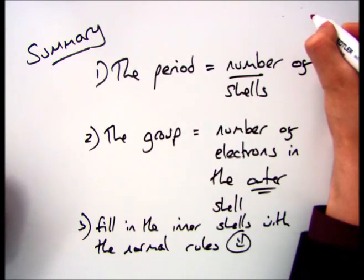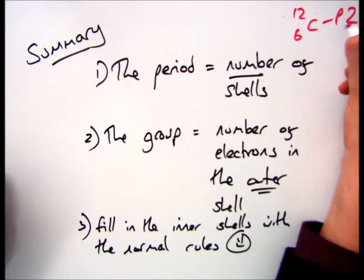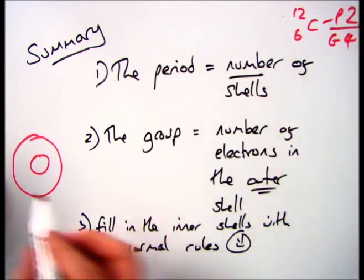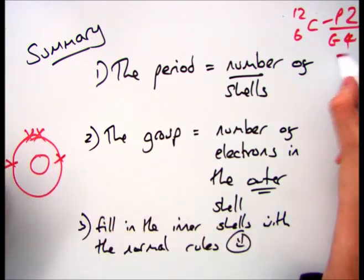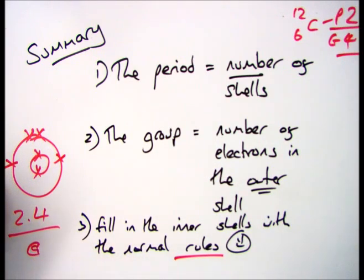So if you're given the example of carbon and told that it's in period 2 and group 4, straight away you know you need to draw 2 shells and then you need to put 4 electrons in the outer shell and then fill in the first shell with the normal rules. And your written configuration is 2.4.